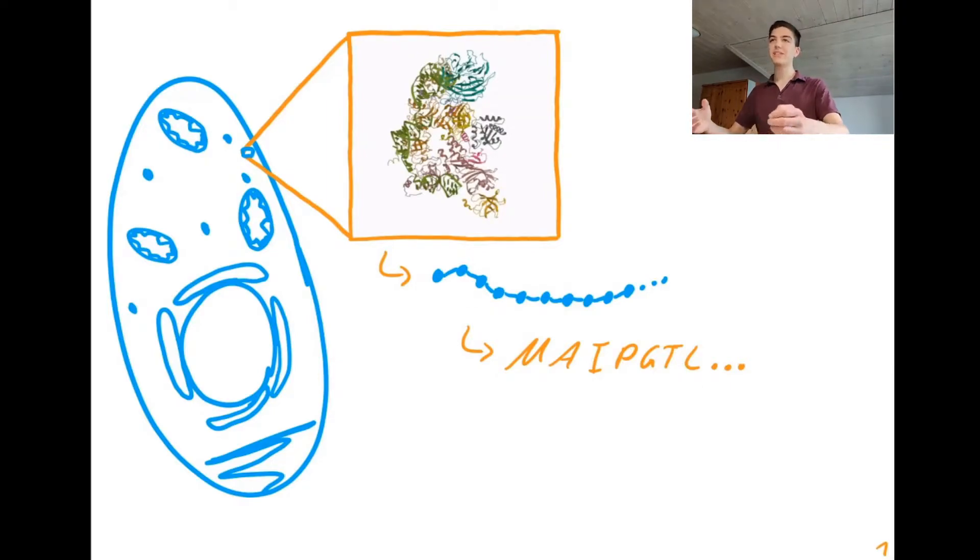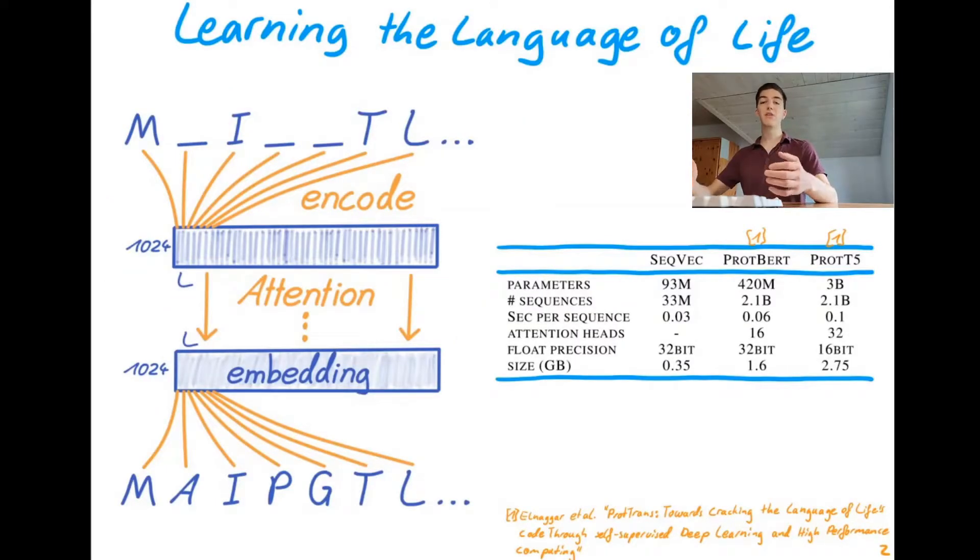Okay, then let us get to our actual method. The first step in our approach, which we can call learning the language of life, is to train a large language model on these protein sequences. Really, very similar to what's commonly done in natural language processing, except that now, instead of a sentence, we have a sequence of amino acids, so a protein sequence, and instead of individual words or word pieces, we now have single amino acids.